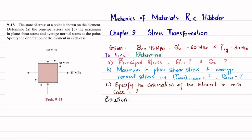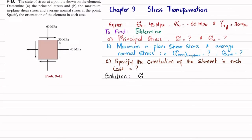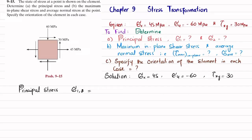Let's start with the solution. We are given sigma X equal to 45 MPa, sigma Y equal to minus 60 MPa, and tau XY equal to 30 MPa. The principal stresses sigma 1 and sigma 2 are given by: sigma 1,2 = (sigma X + sigma Y)/2 ± √[((sigma X − sigma Y)/2)² + tau XY²].